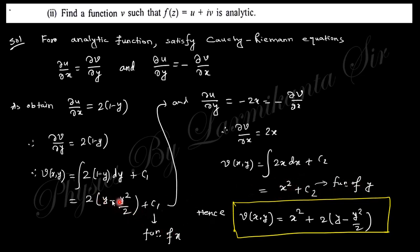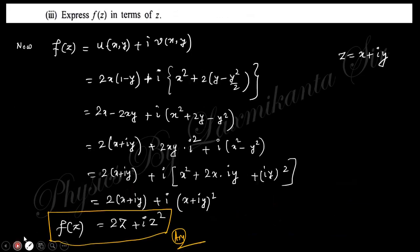Combining these two results — the x function gives x² and the y function — you obtain the expression for v: v = x² + 2y − y²/2.